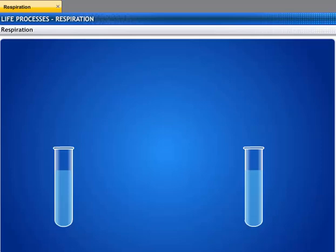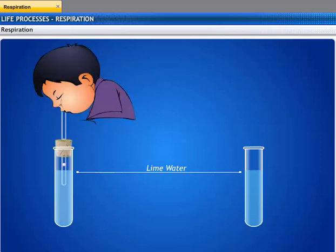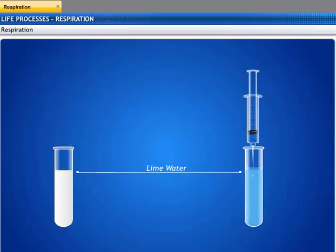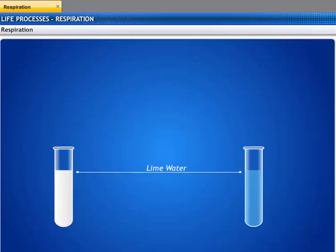Let's try to prove this through an experiment. Take two test tubes containing freshly prepared lime water. Blow air through the lime water in the first test tube, and use a syringe to pass air through the lime water in the second test tube. You will observe that in the first test tube the lime water turns milky immediately, whereas it takes longer for the lime water to turn milky in the second test tube. This proves that the air we breathe out contains more carbon dioxide than atmospheric air.